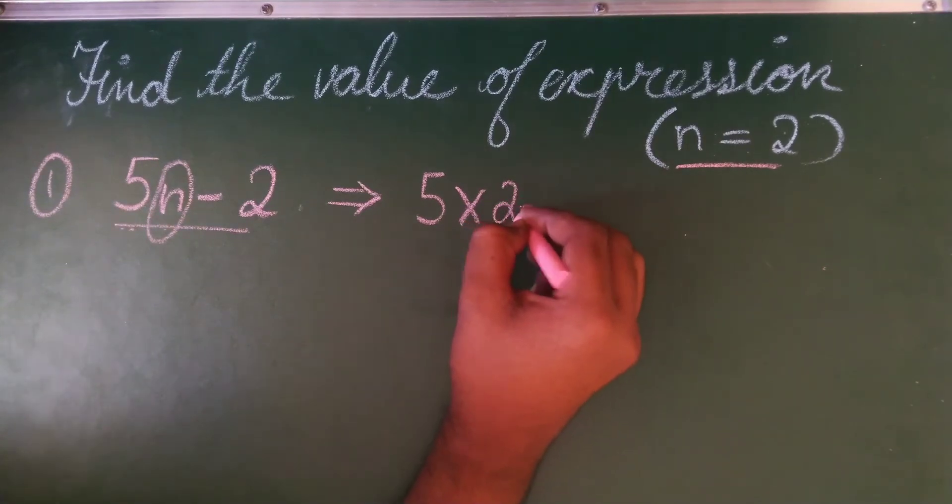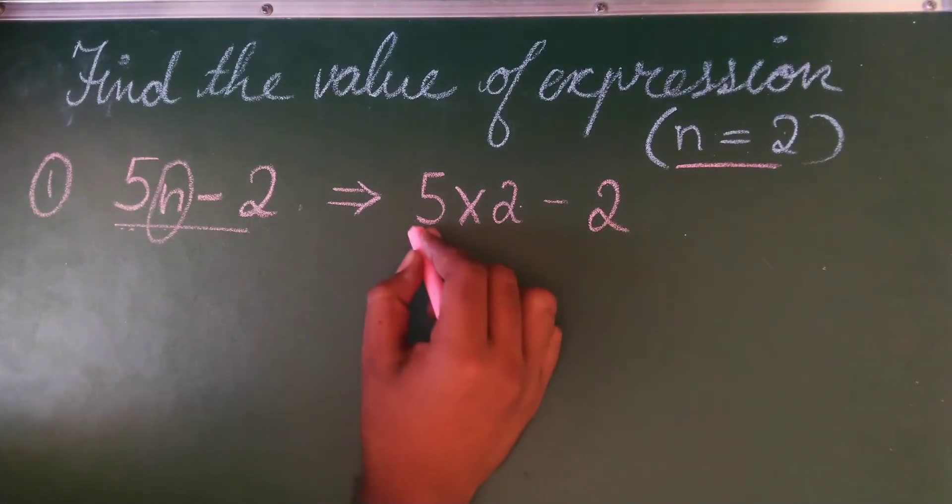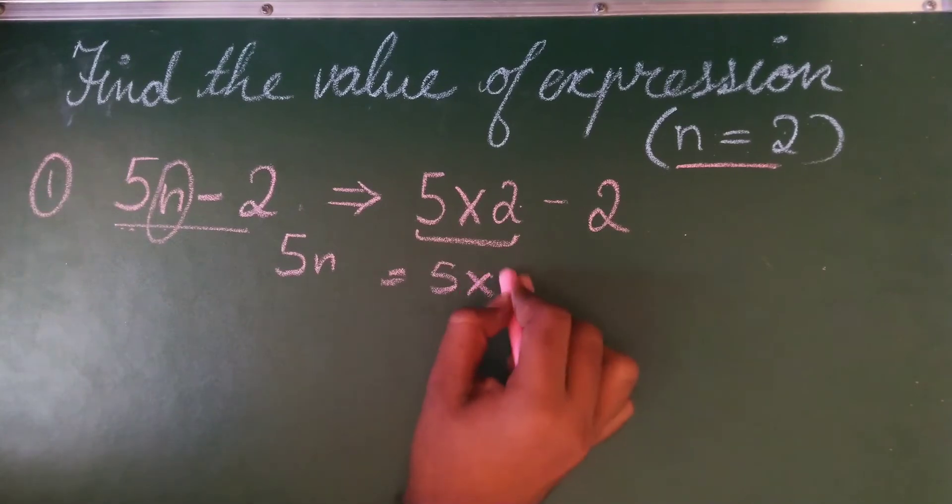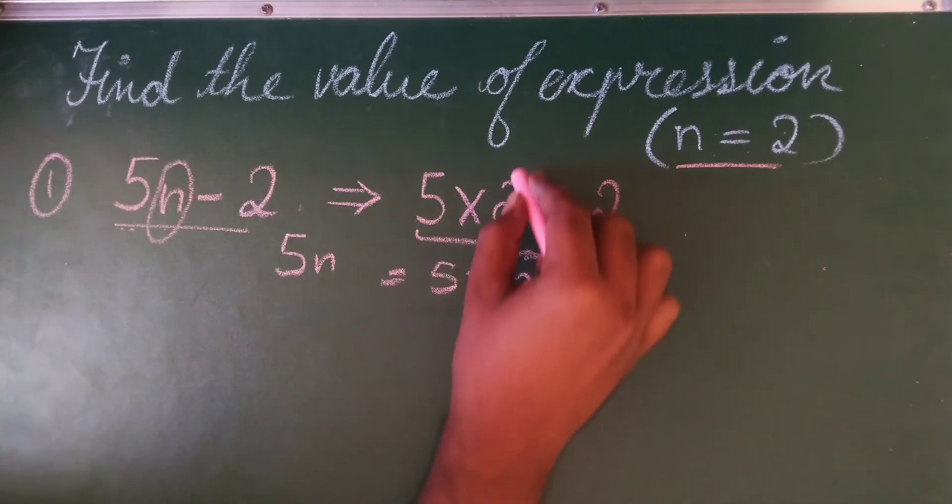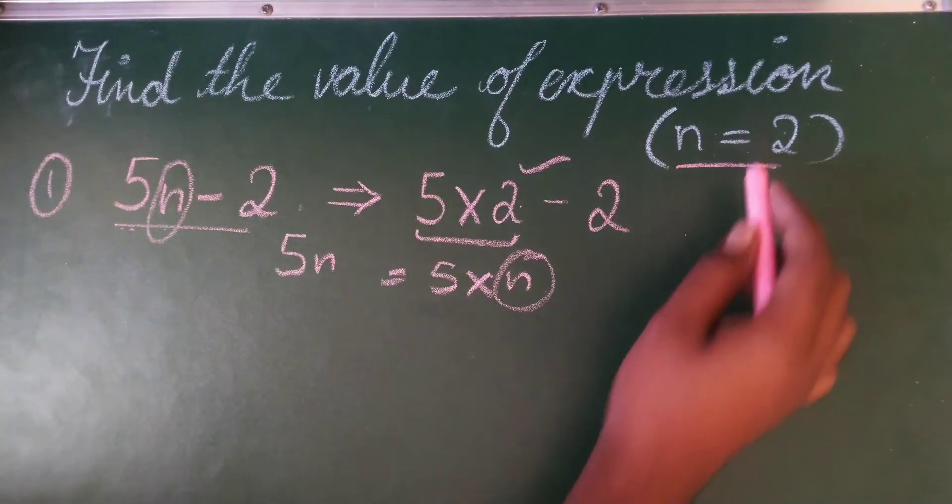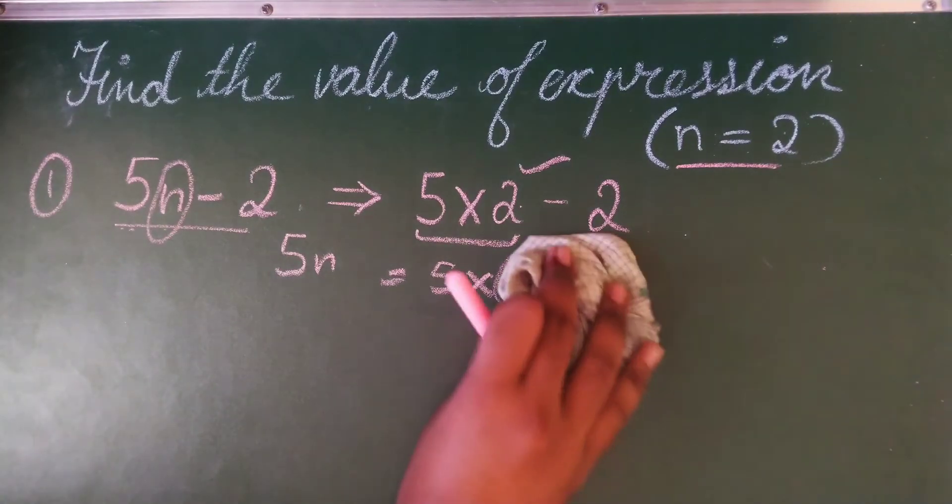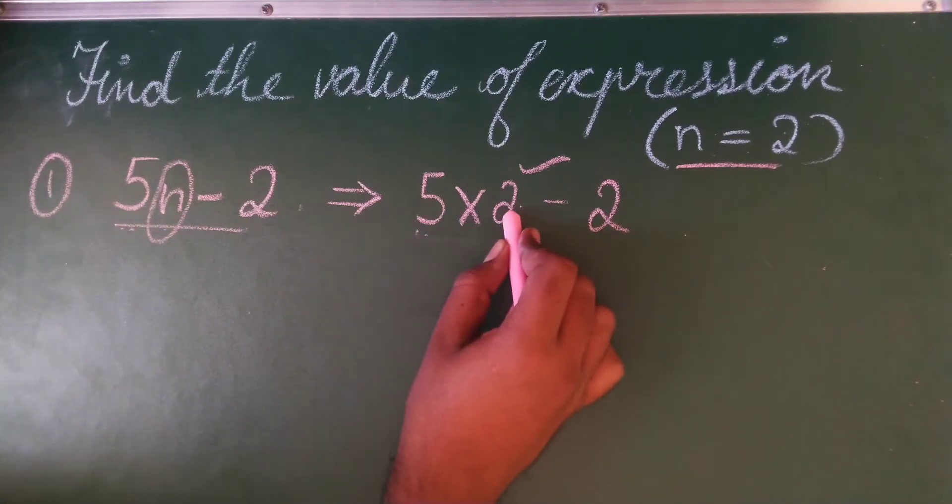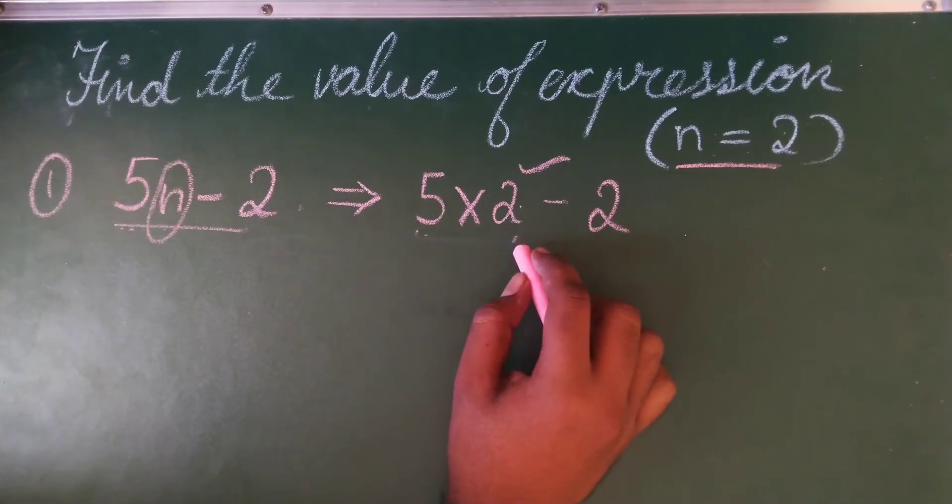So 5 into 2 minus 2. We are multiplying because 5n means 5 into n. That means you have to multiply. In place of n I am placing 2 because in the question it is given find the value of the expression when n is equal to 2. Now 5 into 2 is 10. 10 minus 2 is 8. So I can directly write the value as 8.